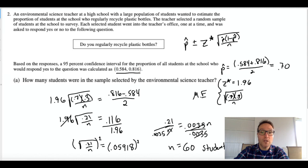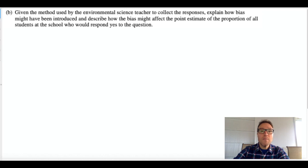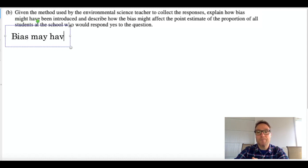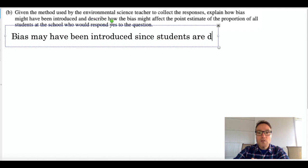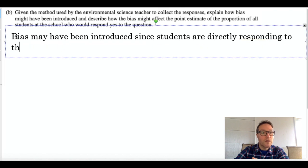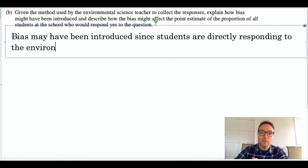Let's go to part B. Okay, given the method used by the environmental science teacher, explain how bias might have been introduced and describe how the bias might affect the point estimate. So I'm going to type out this answer. Bias may have been introduced since students are directly responding to the environmental science teacher, right?